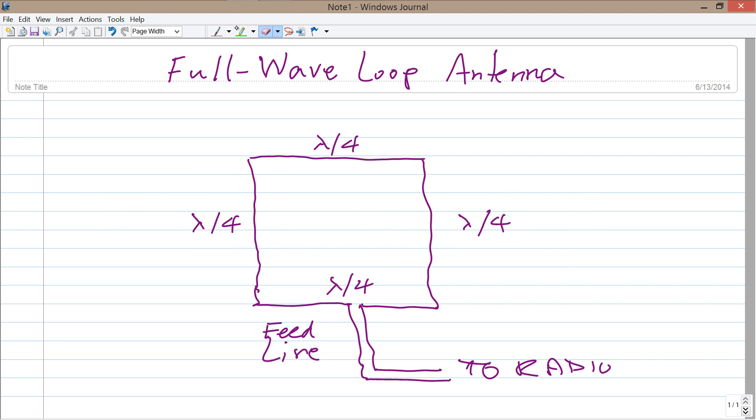Here is a typical full-wave loop antenna. Now imagine that you are standing somewhere looking right down the axis of this loop antenna. It's a square loop.